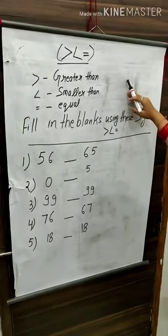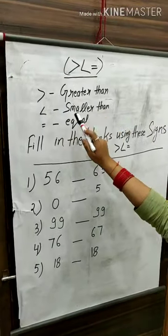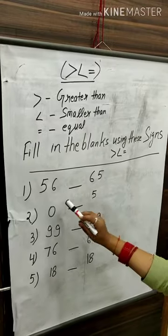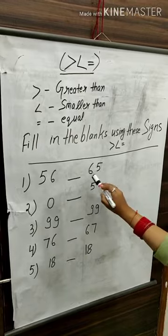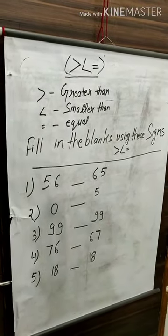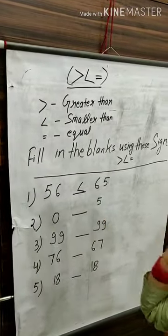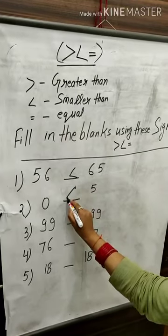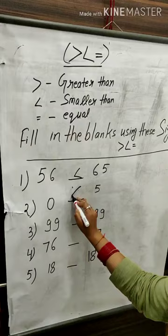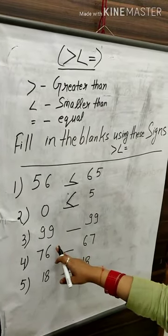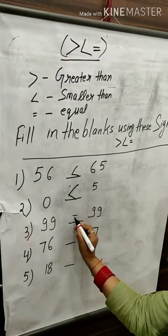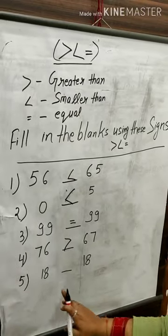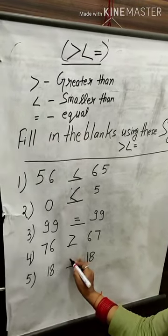My next topic is signs — greater than, smaller than and equal. Fill in the blanks using the sign. Fifty-six is smaller than sixty-five. Zero is smaller than five. Ninety-nine and ninety-nine are equal. Seventy-six is greater than sixty-seven. Eighteen and eighteen are equal.